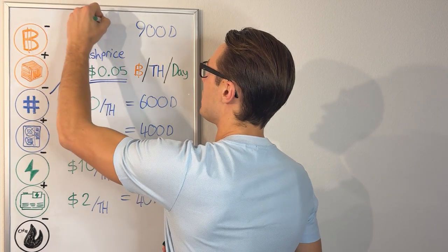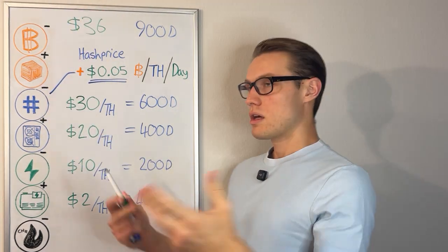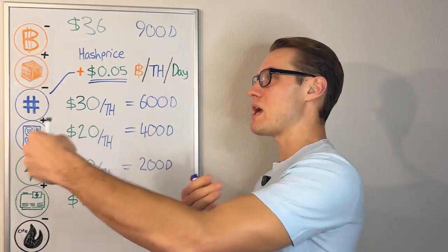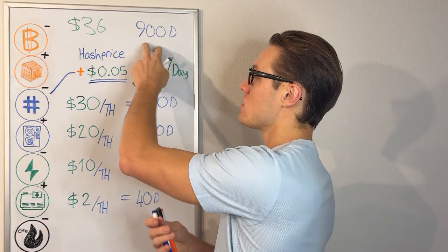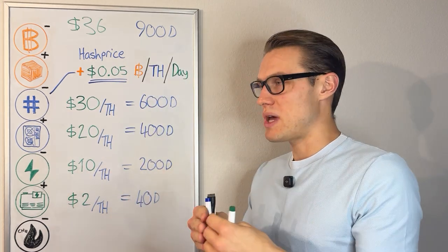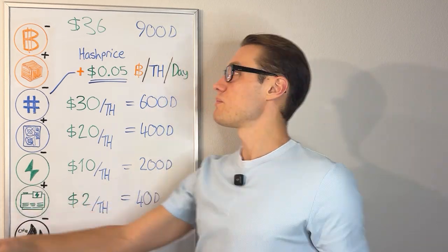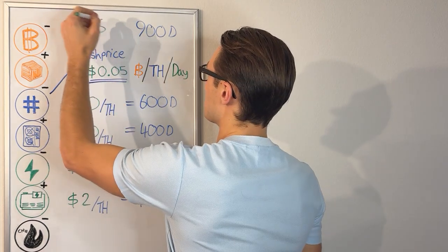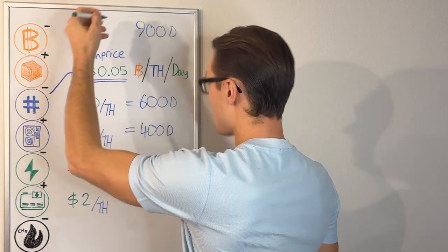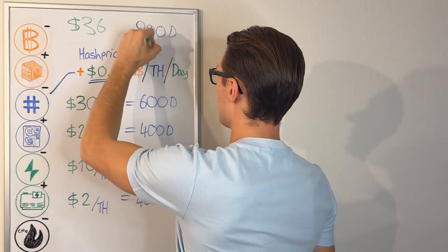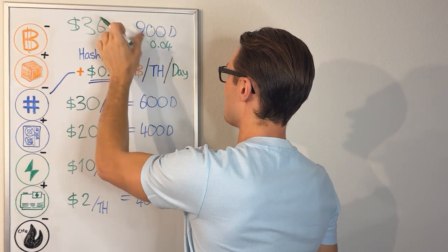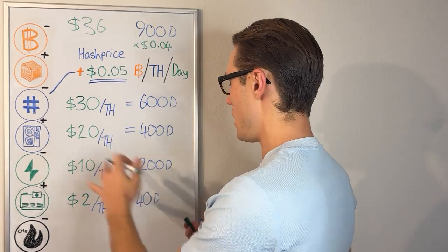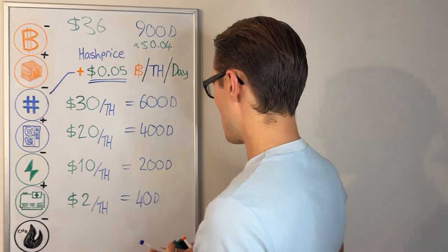That is a calculation of $36 per terahash. So if you are looking to buy the latest efficient machine and really have the full payback period in under 900 days, so that the machine in revenue terms is paying all its money back before the next halving, you can calculate it the other way around. 900 times $0.04 as the dollar amount.